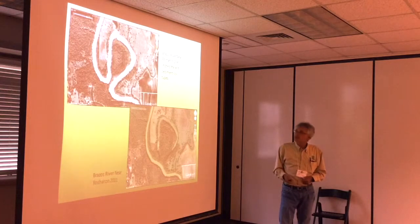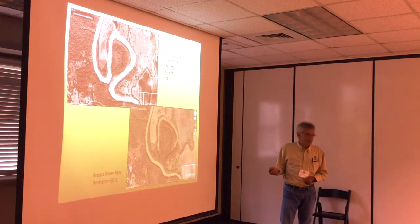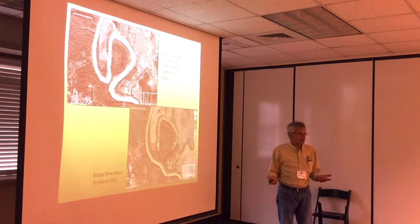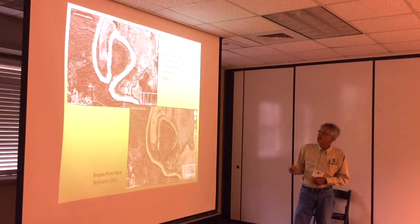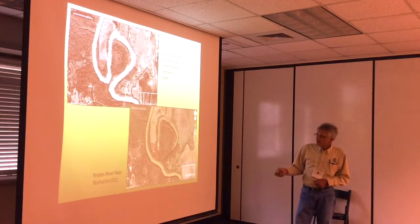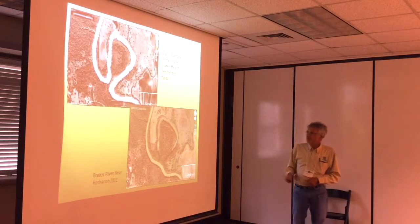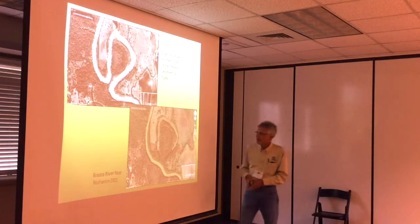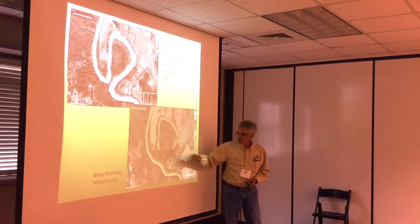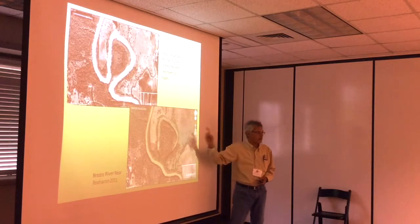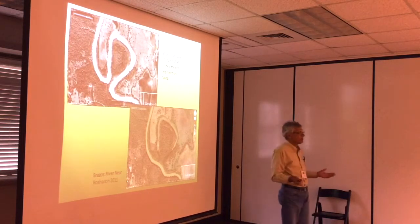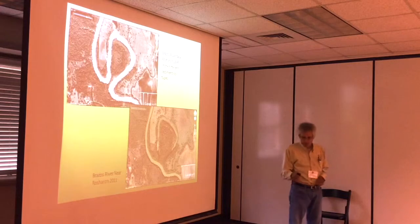Here's an example of how the coastal prairie was formed. You have rivers like the Brazos coming down — this is a 1995 photo near O'Sharon. The river changes course, leaving a piece of channel behind, and you can see that not even 10 years later, most of that channel course has already been filled in with clay sediment from overbank flooding.